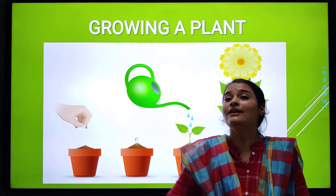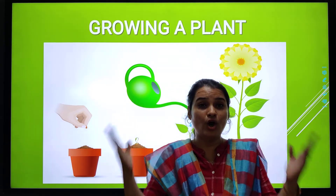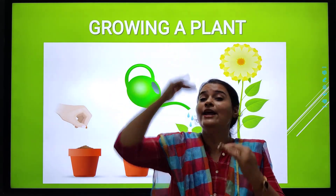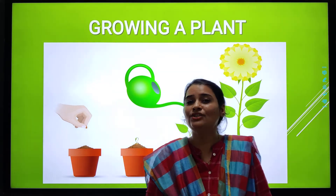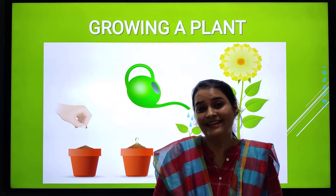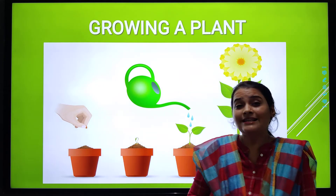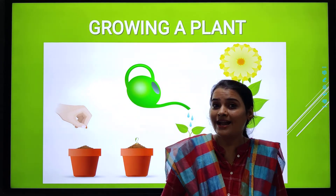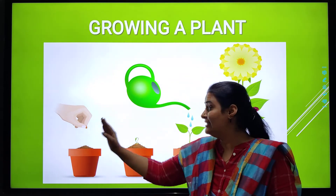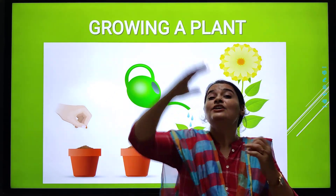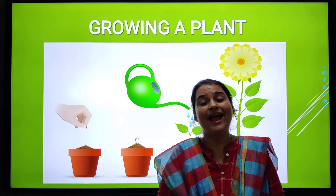Then air and sunlight. Just like we need food to grow — we are small now and we will grow bigger — we also need sunlight to grow. We get some energy from sunlight. So just like that, this seed also needs sunlight, water, air and soil to grow.